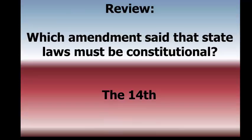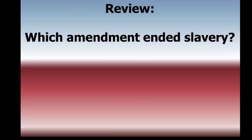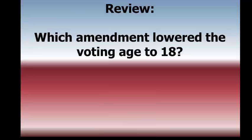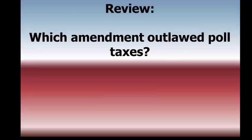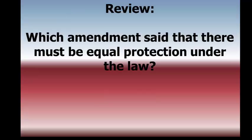Which amendment lowered the voting age to 18? That's the 26th amendment — passed in 1971, so that shows how recent it was. Which amendment outlawed poll taxes? That was also in the 1960s — that was the 24th amendment. Which amendment said that there must be equal protection under the law? Yes, there's a lot of substance in that amendment — that is the 14th amendment.